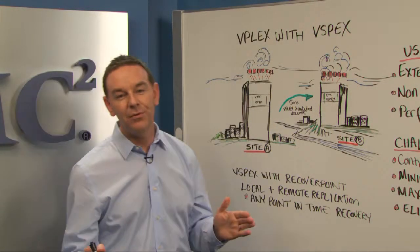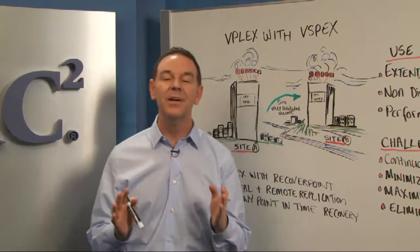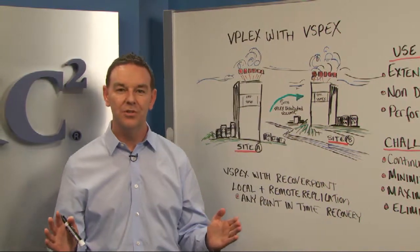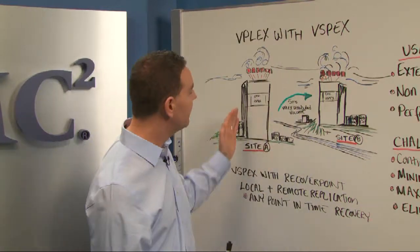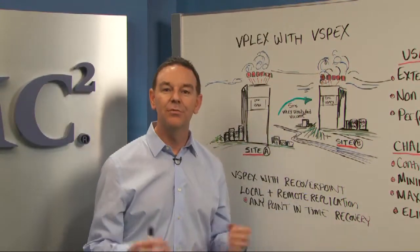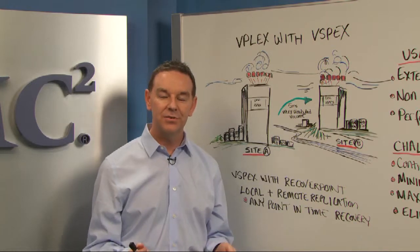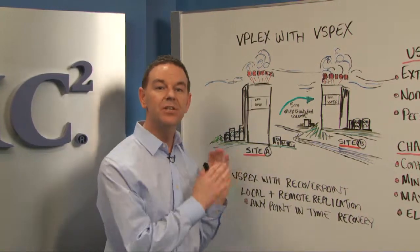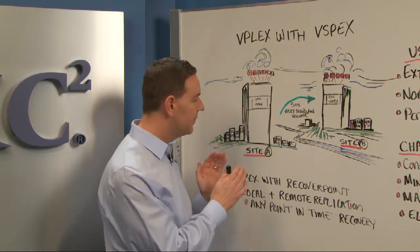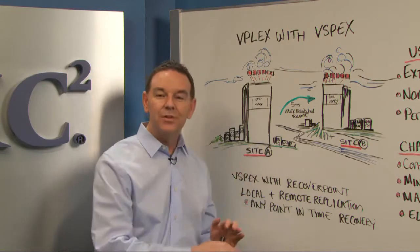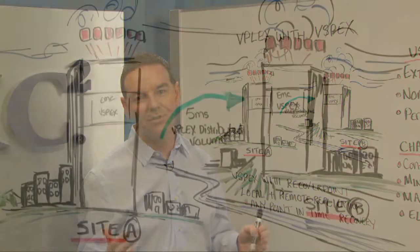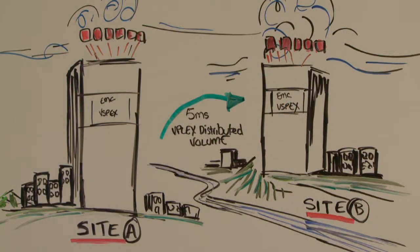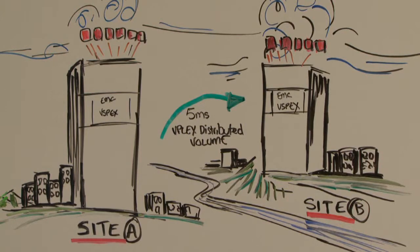Many of our customers have already deployed vSpecs. vSpecs are EMC Proven Infrastructure — reference architectures that bring together virtualization, physical servers, physical network, EMC Unified Storage, and backup. With vSpecs, you can eliminate aging infrastructure and virtualize your server environment, your end user computing, and more importantly, deploy your applications into your private cloud.